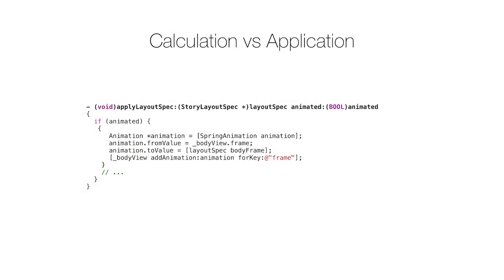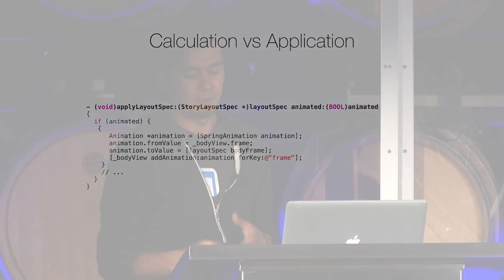This leads into the last principle: the separation of calculating a side effect from applying a side effect. Layout specs are the core of this pattern. When the composer transitions from one kind of story to another, we calculate the destination layout spec — just where everything is going to go on the screen. We calculate that in isolation of where the story is now; we only have to worry about where it's going, not where it is or how it gets there. Once that layout spec is calculated, we have all the final frames and we call this applicator function, optionally animated, and it creates animations for us and everything is handled transparently. You only ever have to think about one state — it's represented by this nice layout spec and everything else is handled automatically.